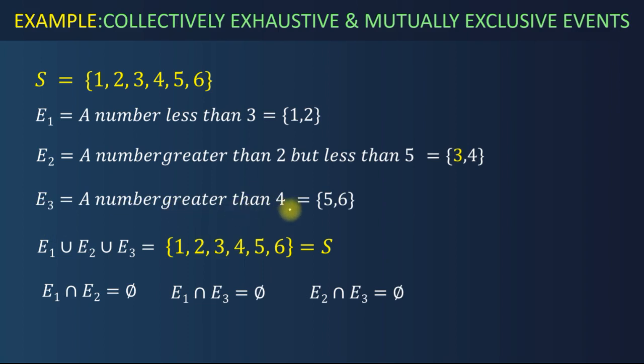If we take union of E1, E2, and E3, we will get all natural numbers running from 1 to 6, which indeed equals our sample space. That means these events satisfy the collectively exhaustive clause. Next we have to verify whether they are mutually exclusive or not.